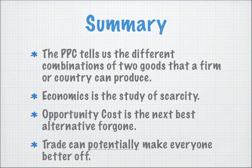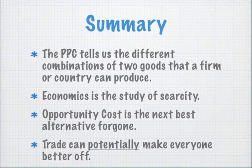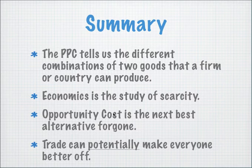For a quick summary: the production possibility curve tells us the different combinations of goods that a firm or country can produce. The second key concept — economics is the study of scarcity, of how to use limited resources to satisfy unlimited wants. The next key concept — opportunity cost — is the next best alternative forgone. In the production possibility diagram, the opportunity cost of producing goods on the y-axis is the amount of goods sacrificed on the x-axis, and vice versa. The last point is that trade can potentially make everyone better off, though certain assumptions must be present for that to be the case.